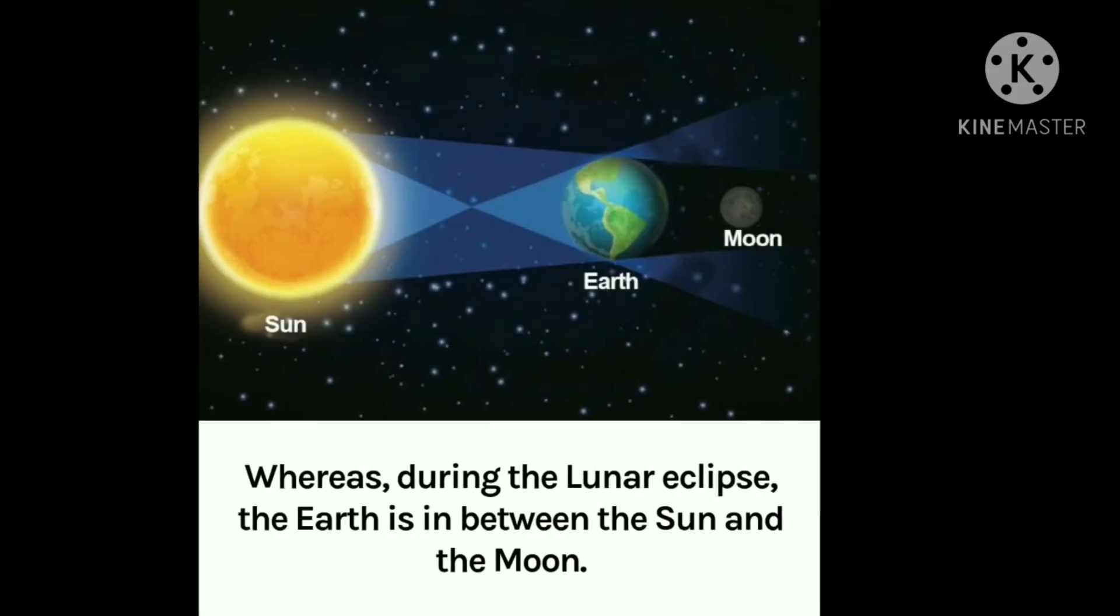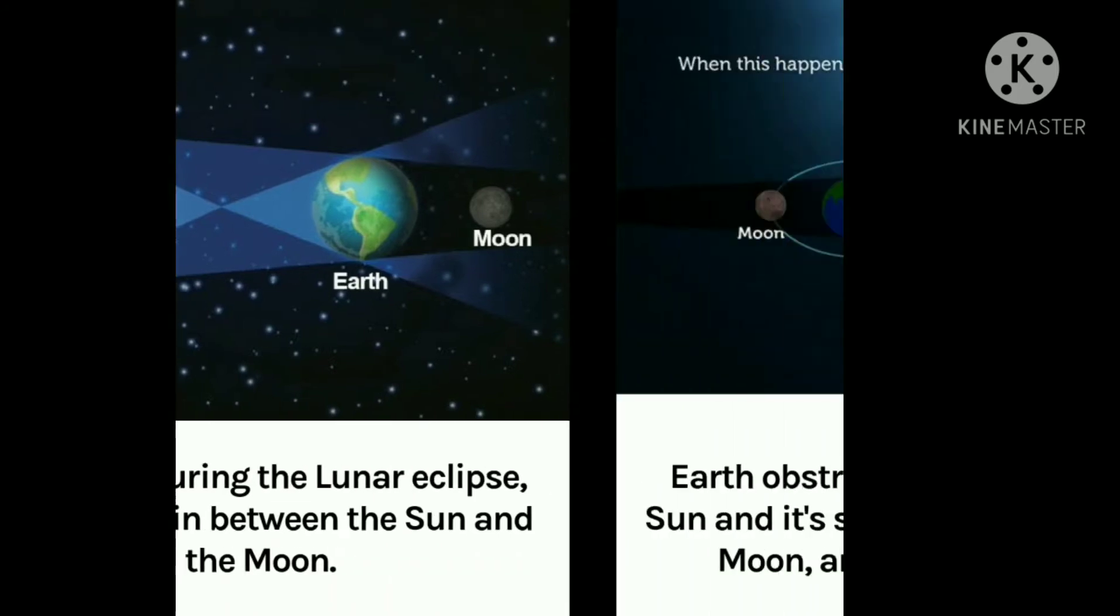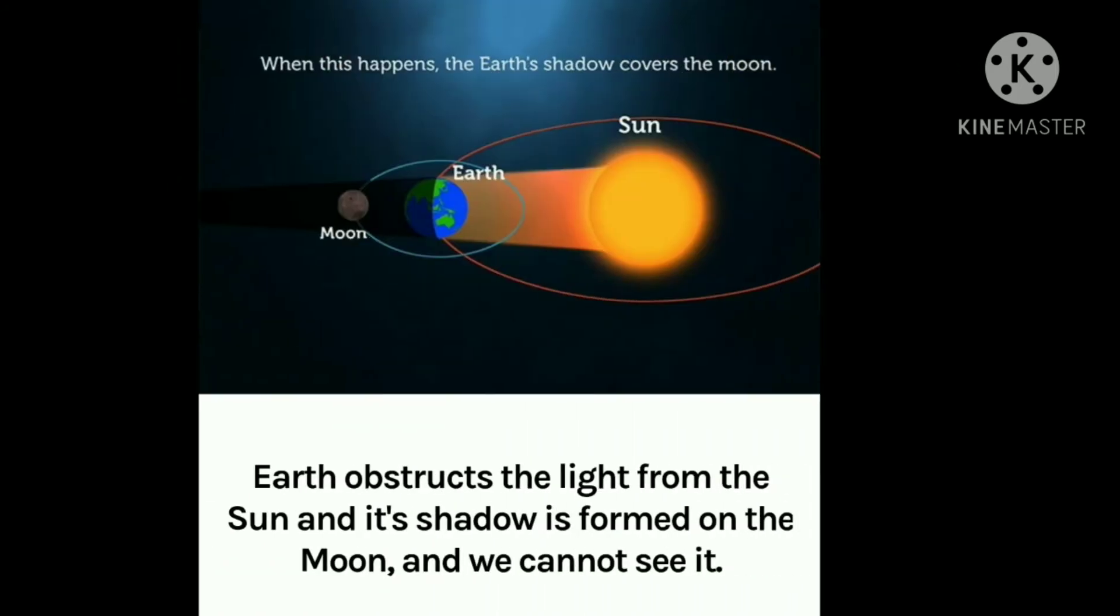Whereas during the lunar eclipse, the earth is in between the sun and the moon. Earth obstructs the light from the sun and its shadow is formed on the moon.